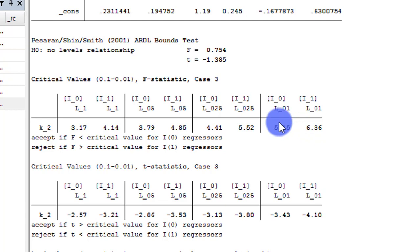So looking at my obtained F-value, vis-a-vis what I have on the screen, I can clearly see that 0.754 falls below each of the I(0) bounds. From here, at the 10% level, the I(0) bound is 3.17. At the 5% level, it's 3.79, and so on. And 0.754 is clearly below the I(0). So the final outcome is that I cannot reject the null hypothesis.